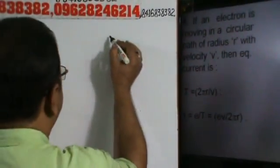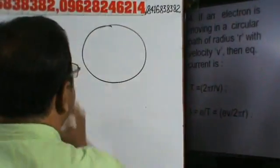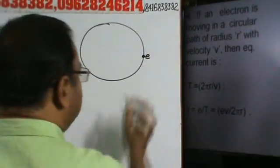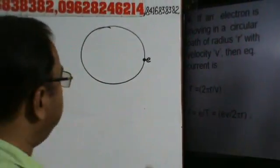Kya hooga? Agar maan ji ki, if we know that the electron is moving in a circular path of radius R with velocity V, then equivalent current is...